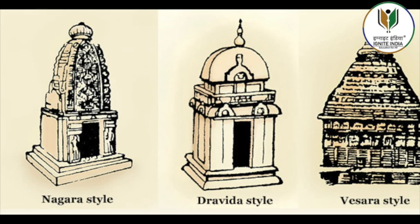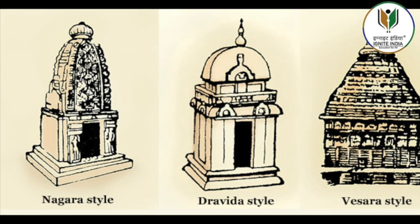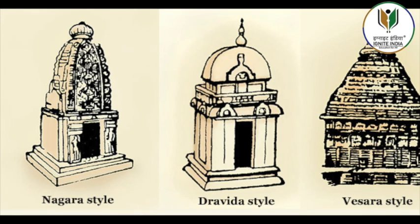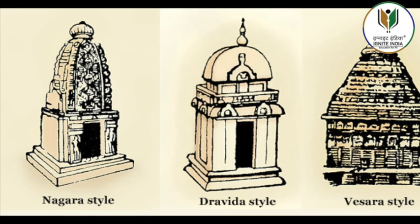The magnificent Shiva temple of Tanjavur, called the Raj Rajeshwara or Brihadishvara temple, was completed around 1009 by Raja Raja Chola and is the largest and tallest of all Indian temples. It is in this temple that one notices for the first time two large Gopurams, gateway towers, with an elaborate sculptural program conceived along with the temple.